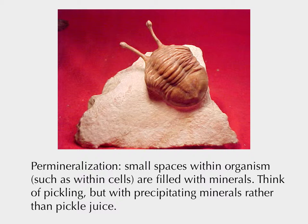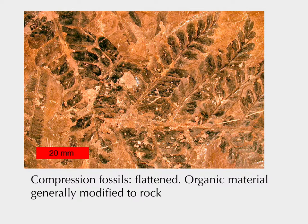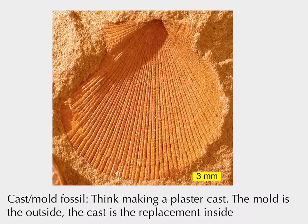Another way to fossilize is permineralization — things like pickling, but with minerals rather than pickling fluids. We can also see compression fossils, which are often flat, so 2D shape is very good but 3D analysis is limited. Another form is a cast or mold: sediment compacts around the organism, the original material gets destroyed, but other rock fills in, so you can still see the cast. The problem with cast fossils is you don't get any information about internal structure — just the outside.